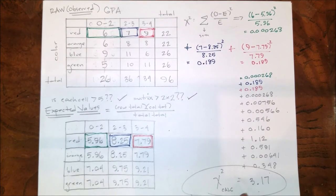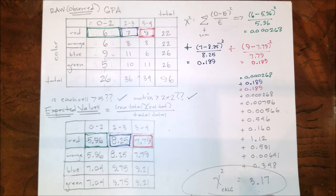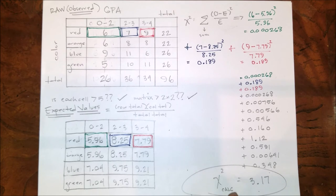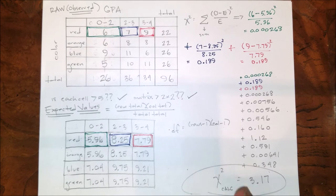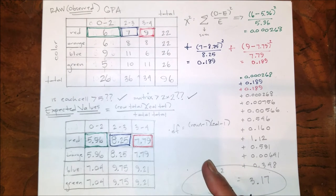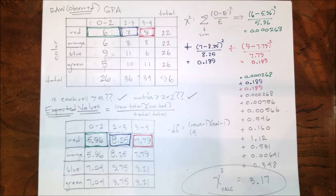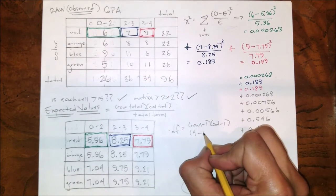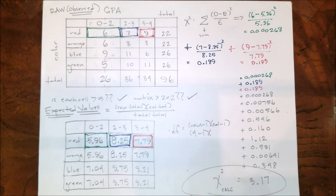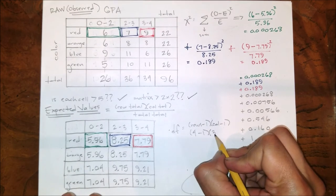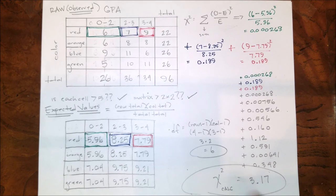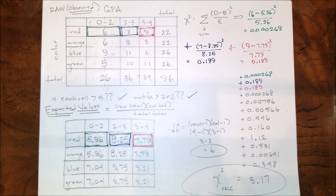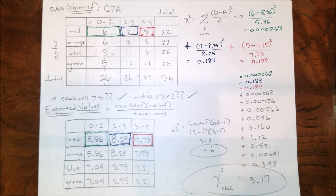Now we do need a chi-square critical value to compare that against, but to get that we'll use a chart and we'll need the degrees of freedom. So don't forget about the degrees of freedom: rows minus 1, columns minus 1, multiply the numbers together. Just data, not totals. So how many rows of data do I have? Four, but don't forget minus 1. How many columns of data do I have? Three, don't forget minus 1. Our degrees of freedom is 6, and we're going to need that to find our critical value.